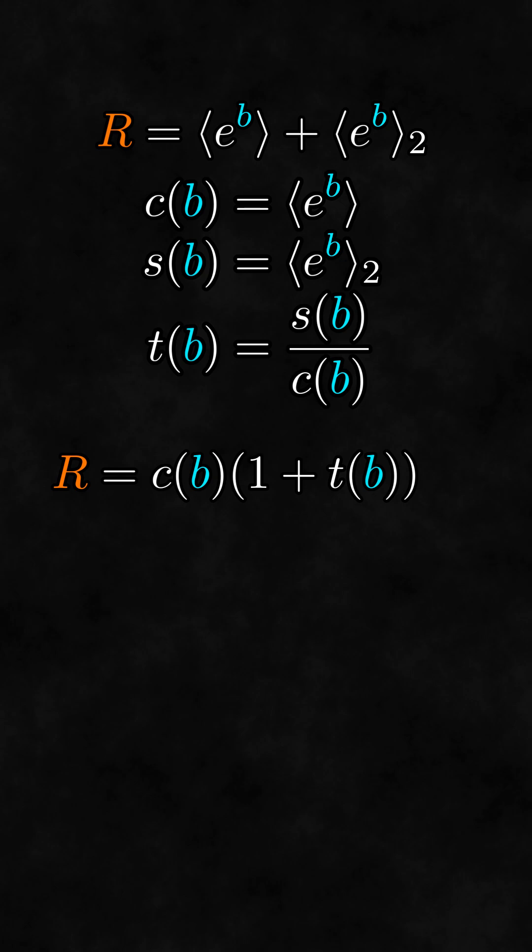Because all rotors are normalized, this allows you to find the rotor by finding the generalized tangent, adding 1 to it, and then normalizing.